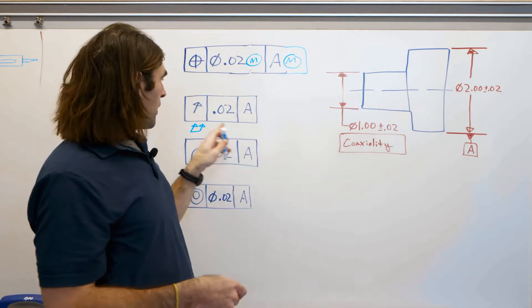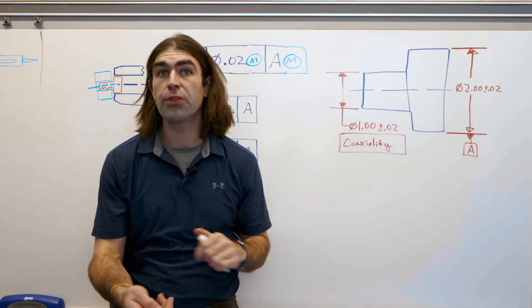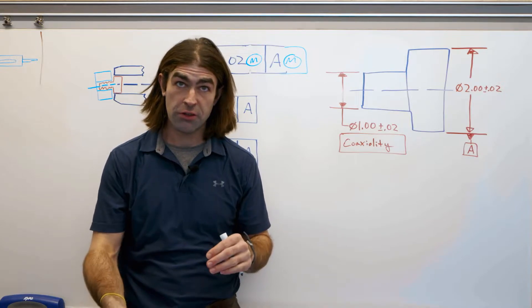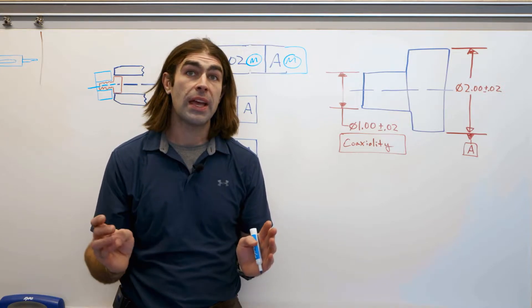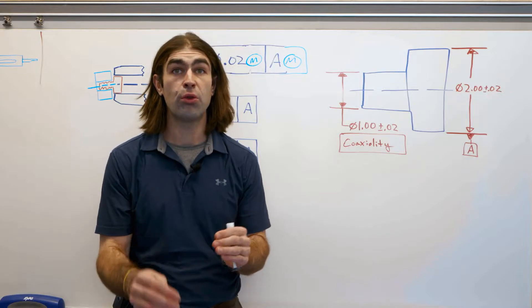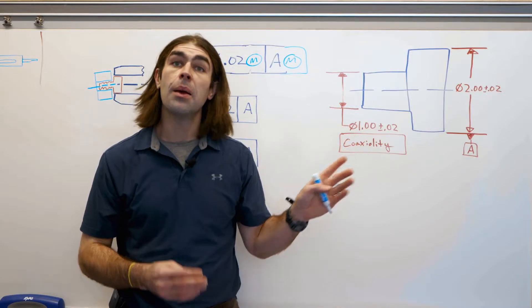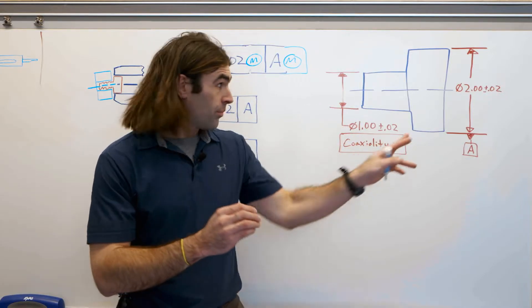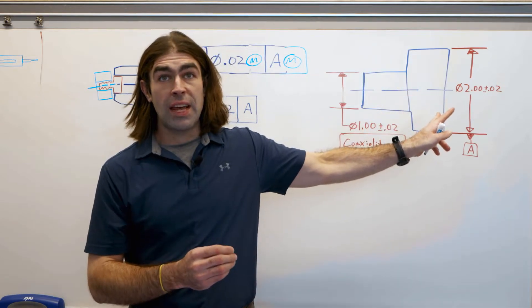So circular run out controls the circularity of the feature and the location of the surface to the datum axis, but not the feature's axis to the datum axis.